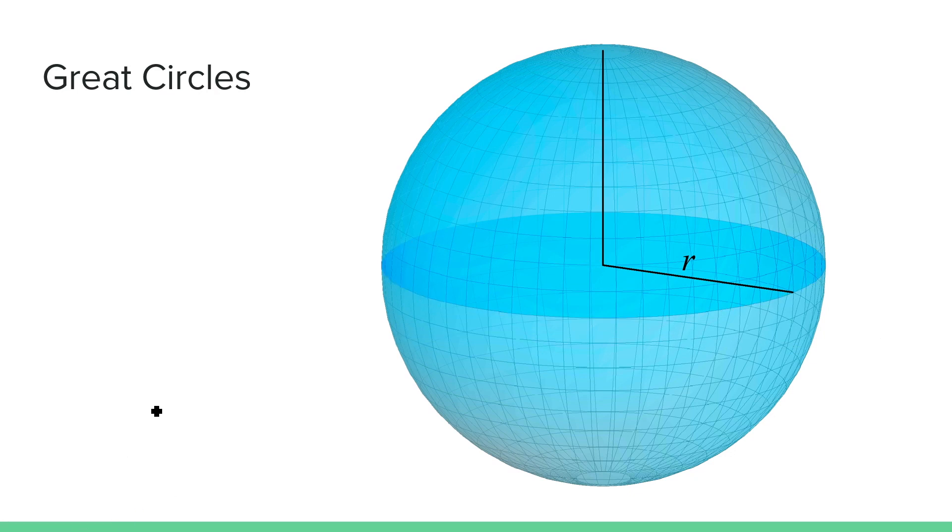Another way to think about lines is that in Euclidean geometry, we can extend a line segment indefinitely. But in spherical geometry, we see that when we extend a line indefinitely, the line connects with itself.